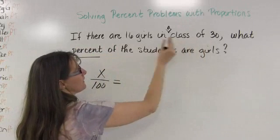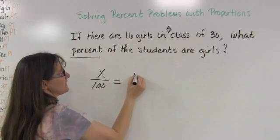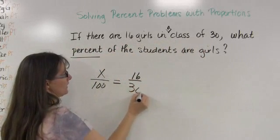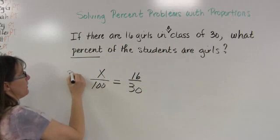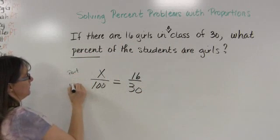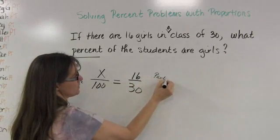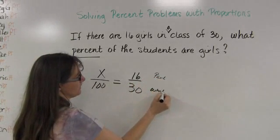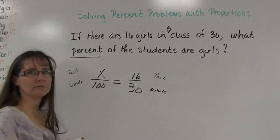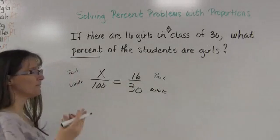If there are 16 girls in a class of 30, well, my proportion is going to be 16 over 30. Remember that this is part to whole, and this is part to whole. I just have to make sure that I set up my proportion to where like things are grouped together.